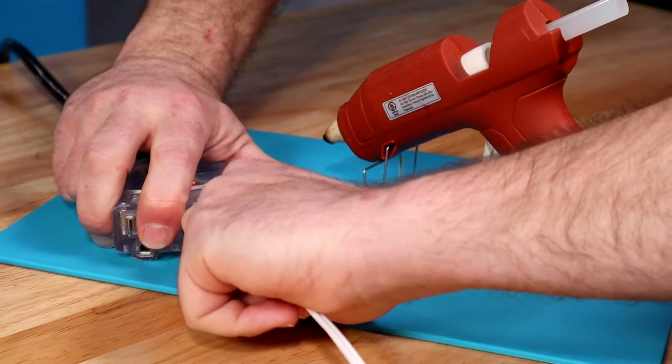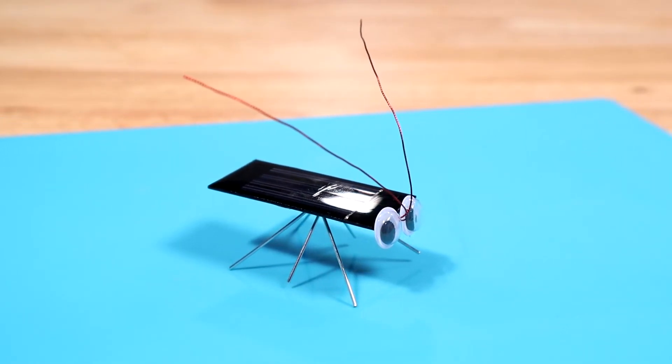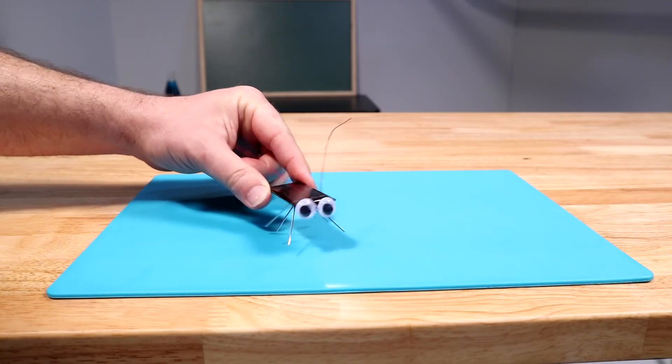Since we're now done with the hot glue, remember to unplug the glue gun. Once the glue is cooled off, we're finished. It's time to take our cockroach outside to play in the sun.